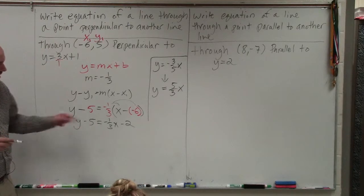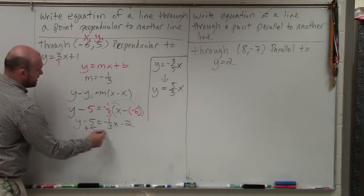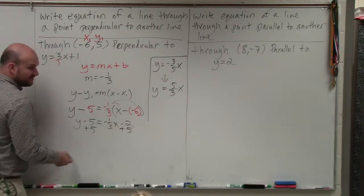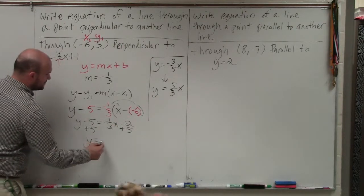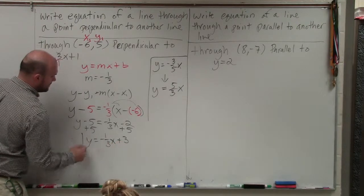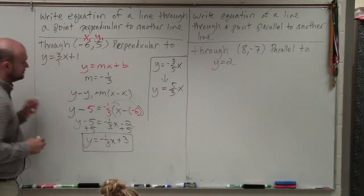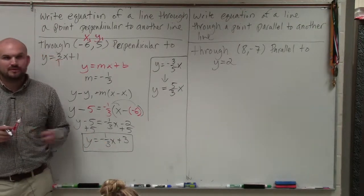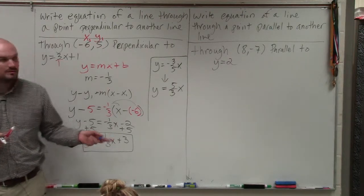And then I'm going to use inverse operations to get rid of the 5. I'll add 5 to that negative 2. So I have y equals negative 1 third x plus 3. Anybody want me to re-explain anything? We're good.